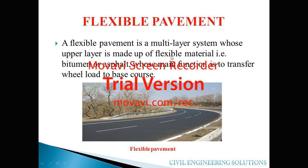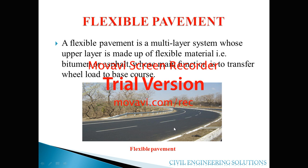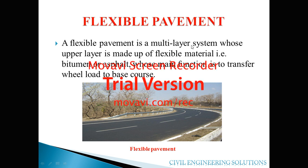A flexible pavement is a multi-layer system whose upper layer is made up of flexible material — that is, bitumen or asphalt — whose main function is to transfer wheel load to the base course. In this type of road, the uppermost layer is made up of bitumen. The flexible pavement is a multi-layer system, so we will see how many layers it consists of and the function of each layer.